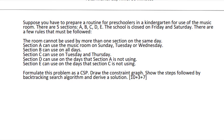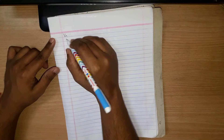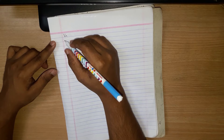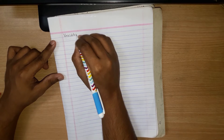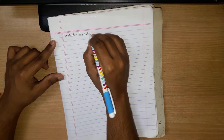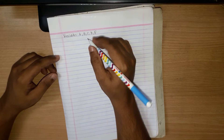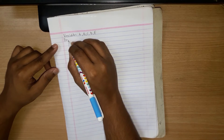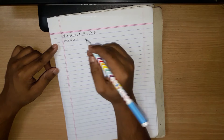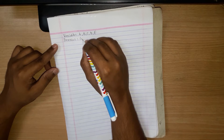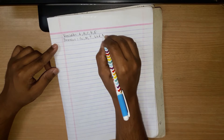First, you need to create variables. The sections are the variables, so you write variables A, B, C, D, and E. The days are the domains. Since Friday and Saturday are off, the domains will be Sunday, Monday, Tuesday, Wednesday, and Thursday.